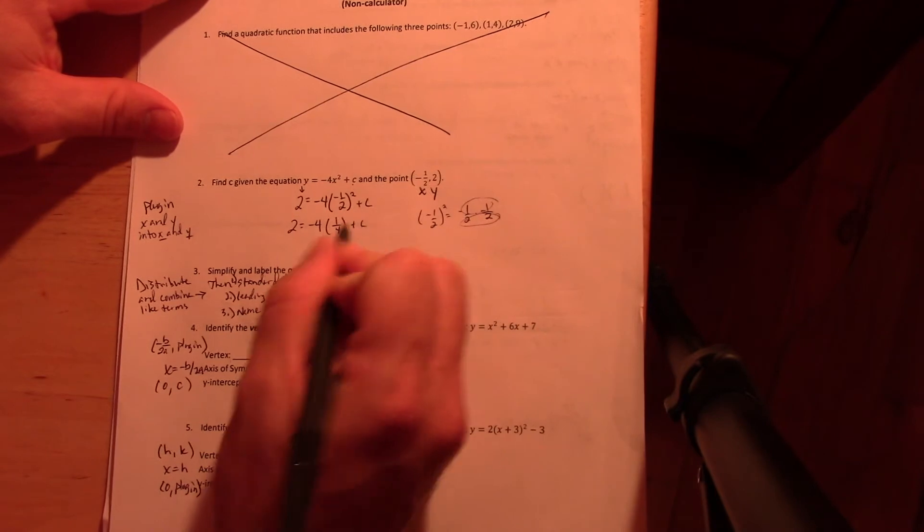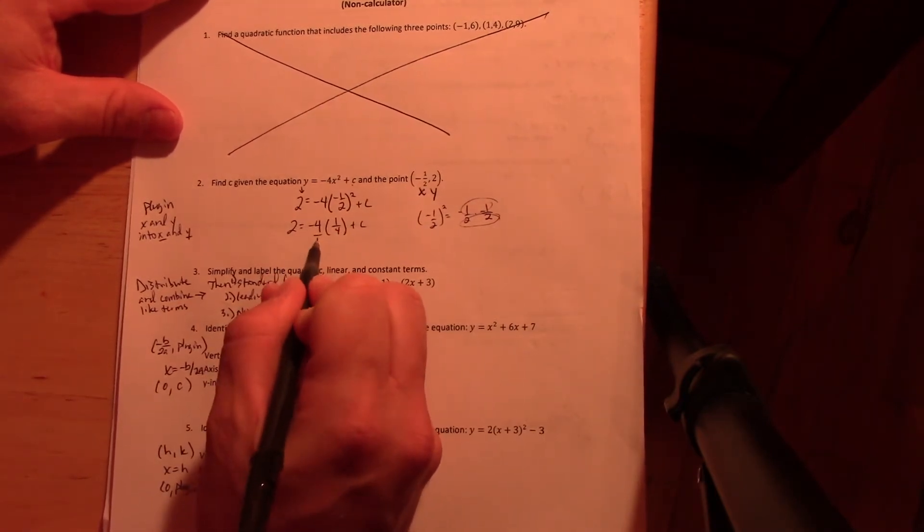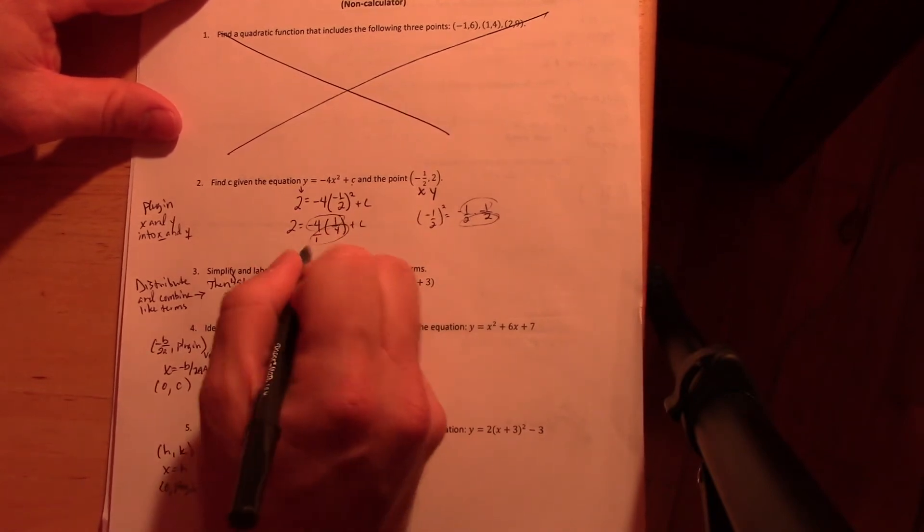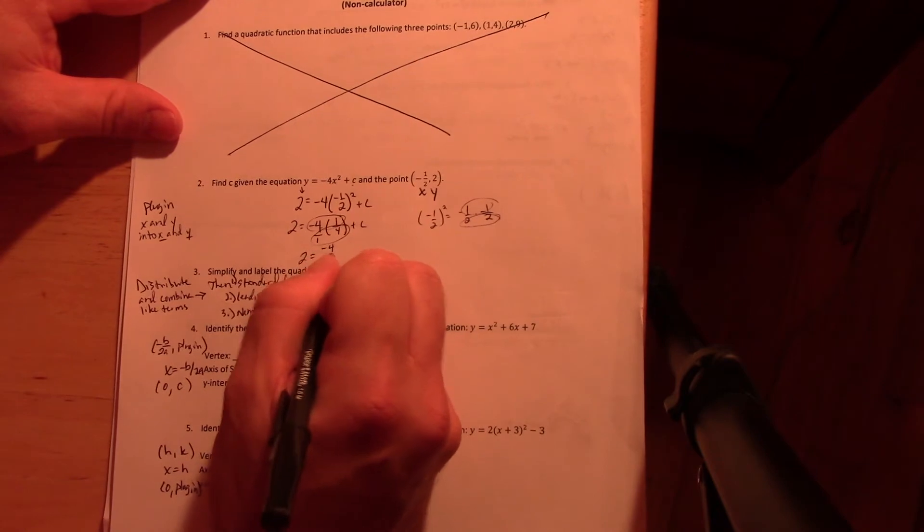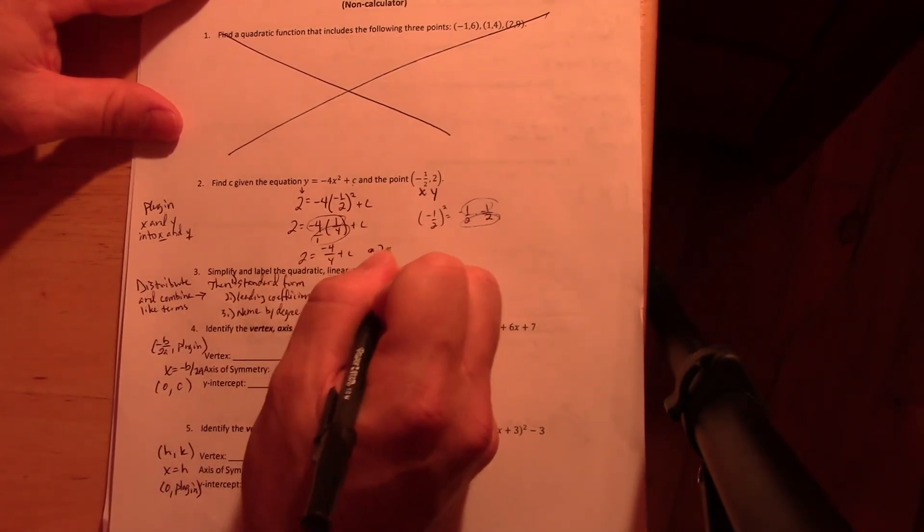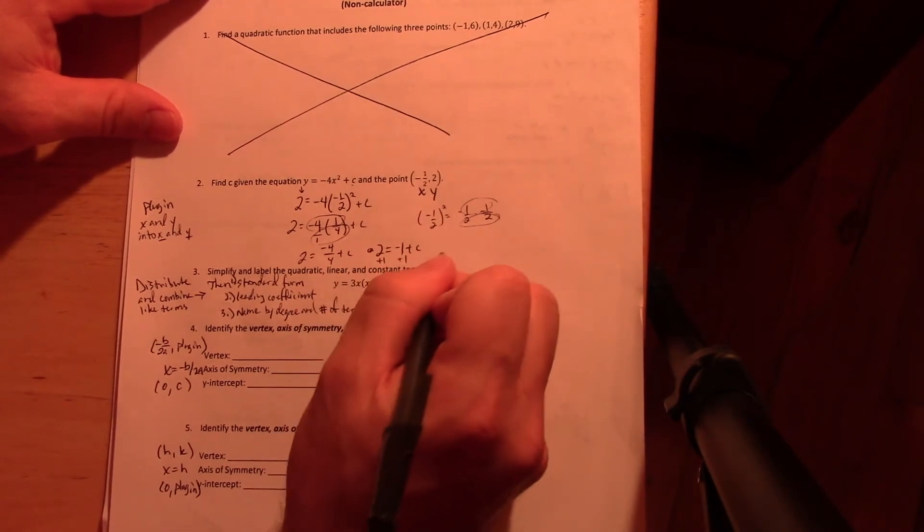Now similarly, when you multiply a number times a fraction, you can just put that over 1 and multiply tops times tops and bottoms times bottoms. So what I get here is 2 equals negative 4 over 4 plus C, which of course is, excuse me, 2 equals negative 1 plus C. And add one to both sides: C is 3.